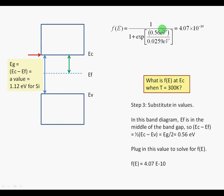At 300 Kelvin, KT is 0.0259 eV, which is a very convenient number to remember. So F of E equals 4.07 times 10 to the minus 10.